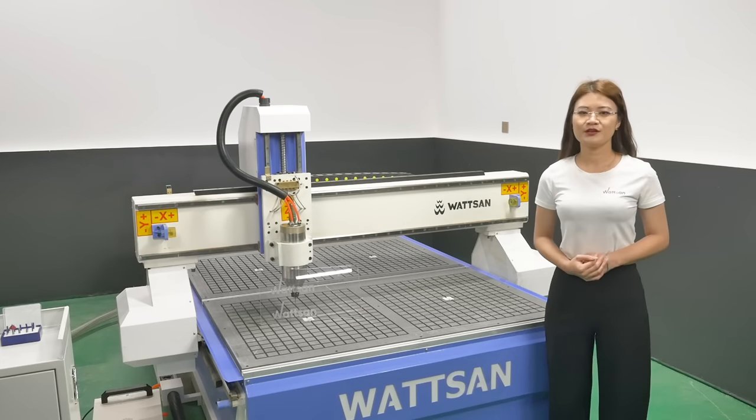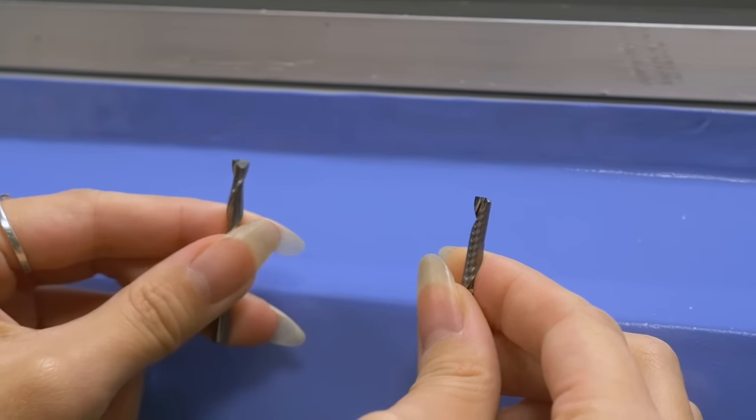How to work with the material? For processing plexiglass, we recommend using spiral or double helical cutters.